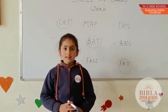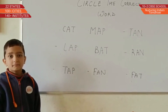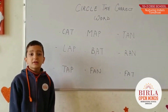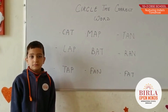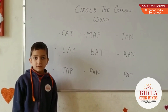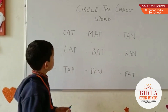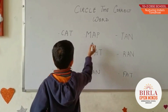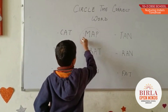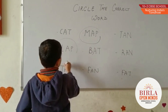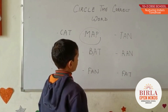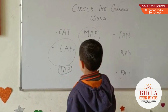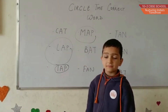Good morning, Tabriz. What activity are we doing today? Circle the correct words. Okay. Can you circle the AP family words? Yes, ma'am. M-A-P. Very good. M-A-P. Very good. P-A-P. Very good. Thank you, Tabriz. You are welcome.